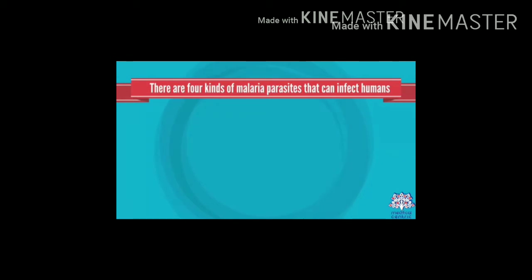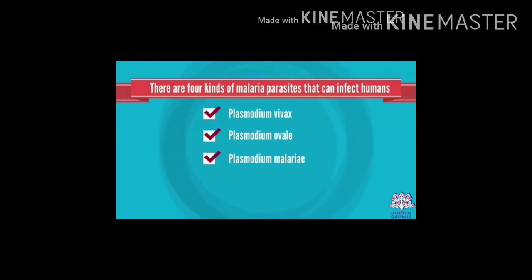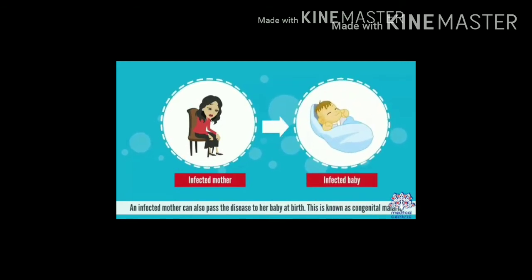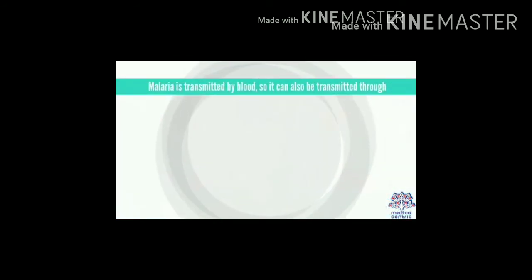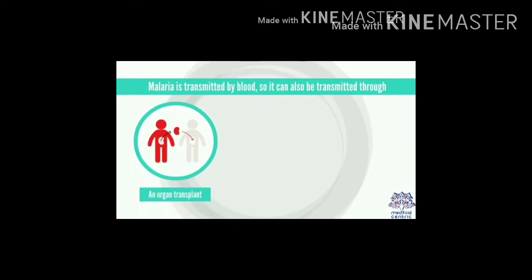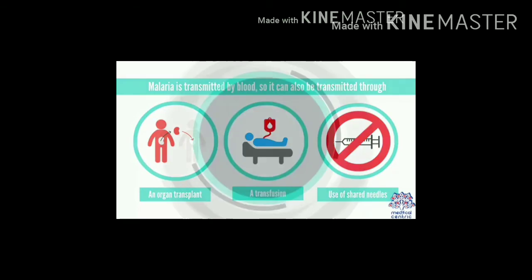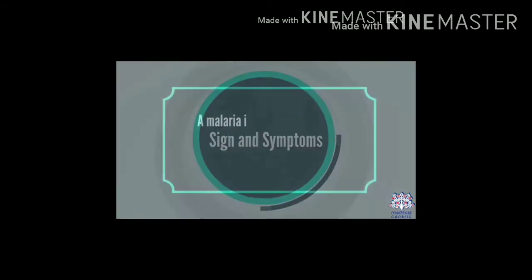The four Plasmodium species are: Plasmodium vivax, Plasmodium ovale, Plasmodium malariae, and Plasmodium falciparum. Plasmodium falciparum causes the most severe form and has a higher risk of death. An infected mother can also pass the disease to her baby at birth — known as congenital malaria. Malaria can also be transmitted through organ transplant, transfusion, or shared needles.